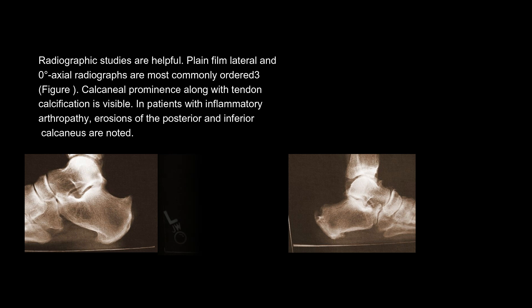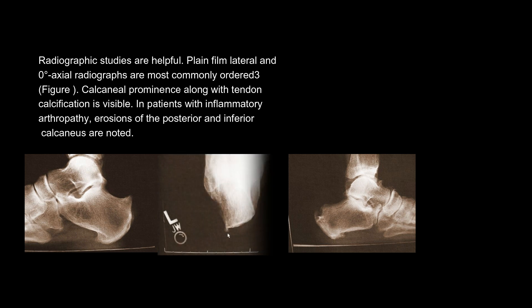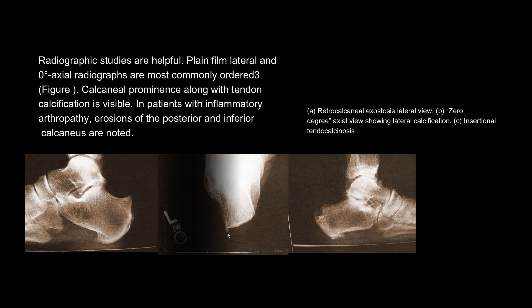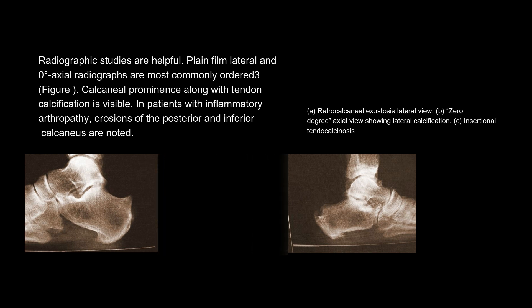Radiographic studies are helpful. Plain film lateral and zero degrees axial radiographs are most commonly ordered. Calcaneal prominence along with tendon calcification is visible. In patients with inflammatory arthropathy, erosions of the posterior and inferior calcaneus are noted. Views include: A. Retrocalcaneal exostosis lateral view. B. Zero degree axial view showing lateral calcification. C. Insertional tendocalcinosis.